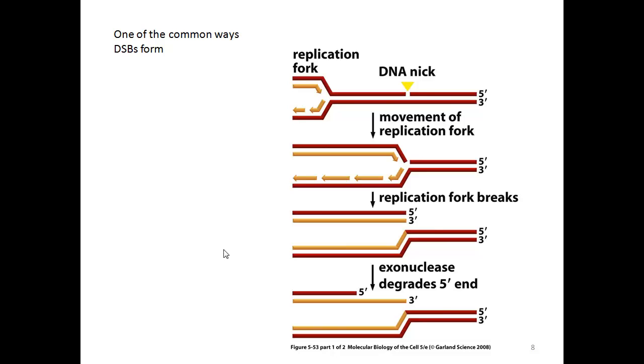One of the ways that double-strand breaks occur is through ionizing radiation like x-rays or cosmic rays.